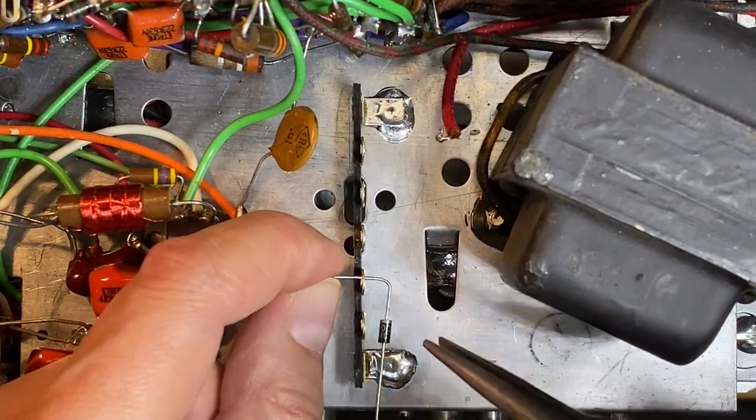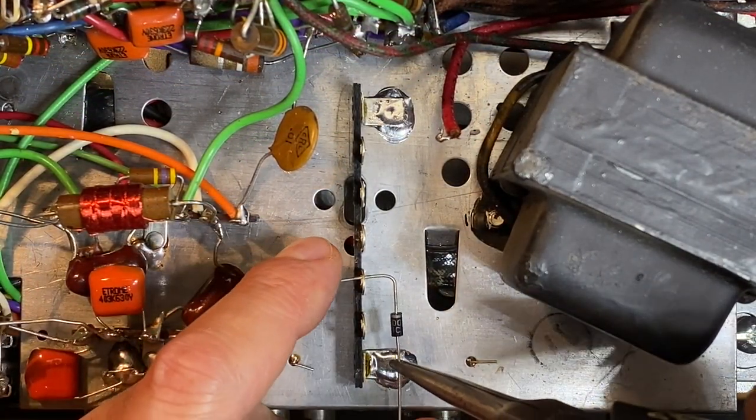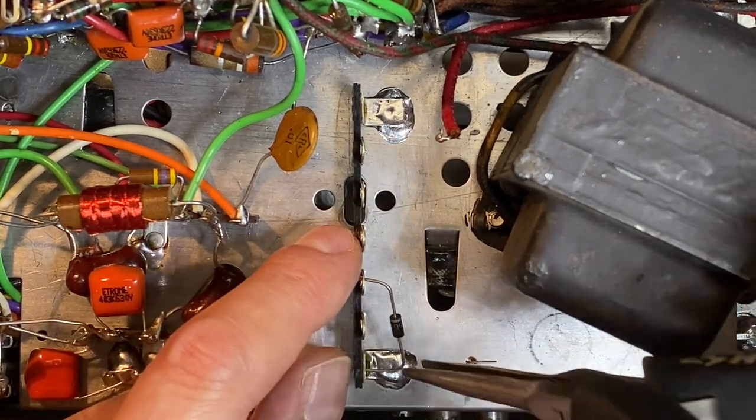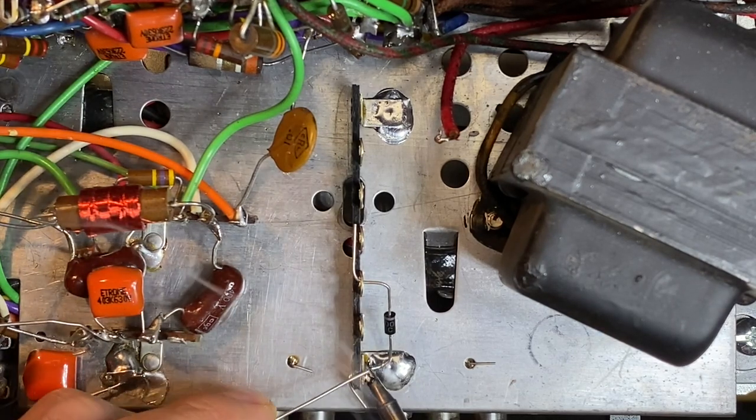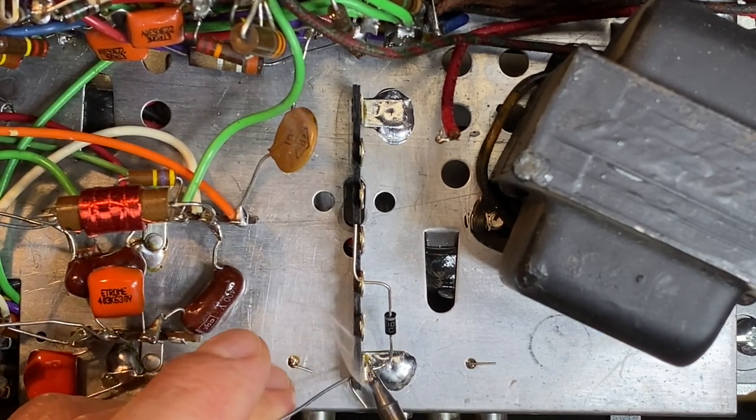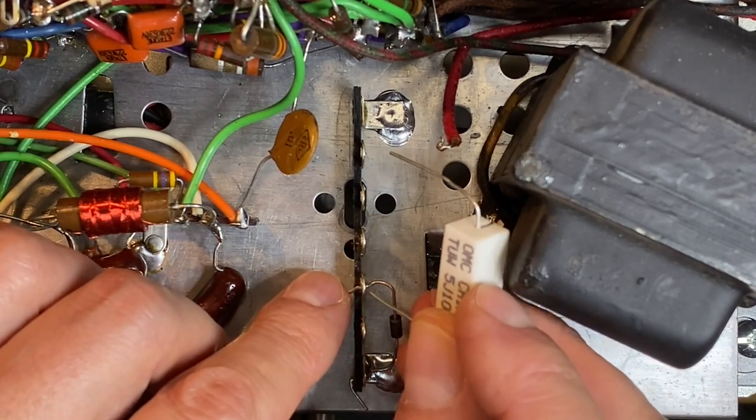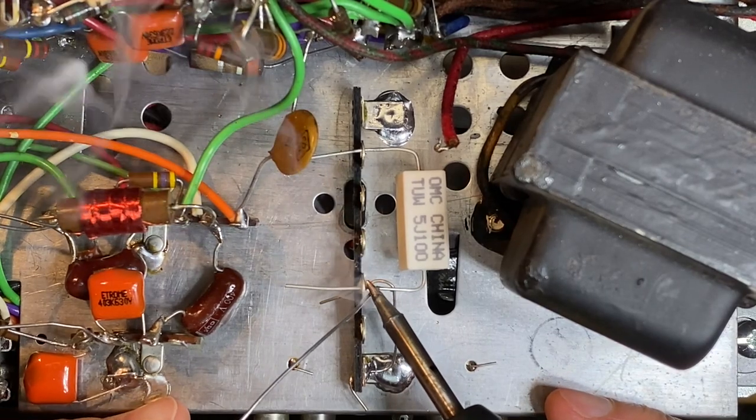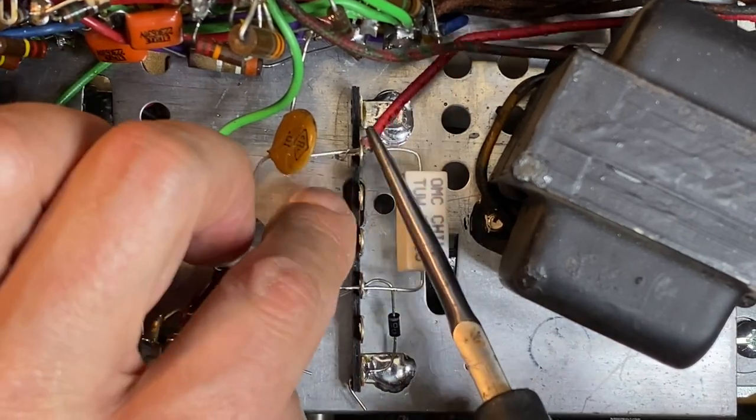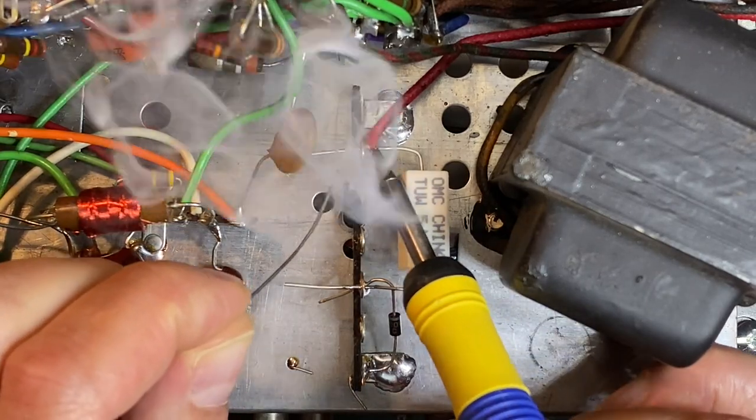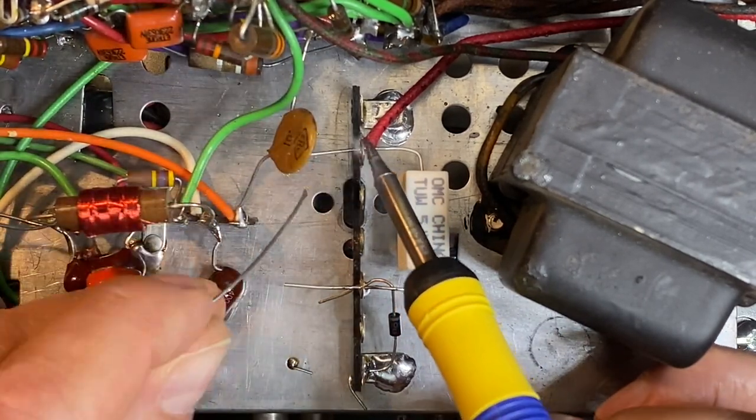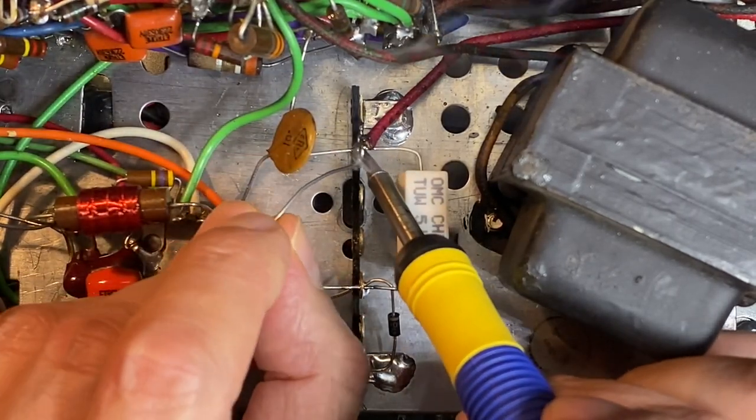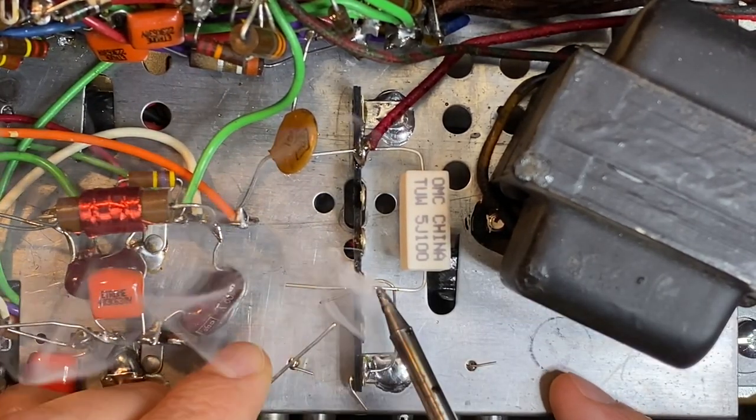First, a diode was installed with the anode connected to chassis ground. Next, I installed a resistor. Later in this video, I'll explain how to select the correct diode to replace the selenium, why a resistor is required, and how to calculate the correct value. Finally, I connected the red wire coming from the transformer, and temporarily tacked the components in with solder.